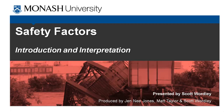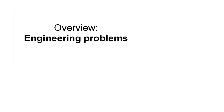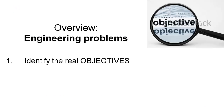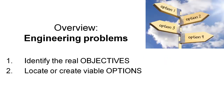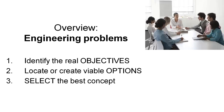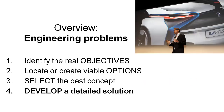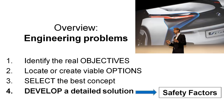Hi guys, it's Scott here and in this video we're going to introduce the concept of safety factors and explain how you should go about interpreting safety factors and even develop them for some of your own design problems. Where does this fit within our overview of engineering problems? We've already learned how to identify the real objectives of our problems via the OFIS process, and we've figured out how to locate or create viable options using the morphology method. We can select the best concept via a decision making process, and in this next phase we go about developing a detailed solution. The first step in that process is sometimes to determine safety factors, which we can use in our stress calculations to ensure adequate safety and a high probability that our designs are not going to fail.